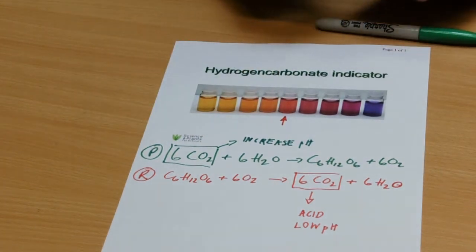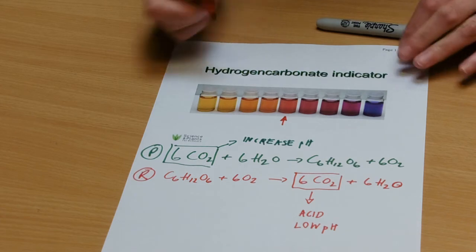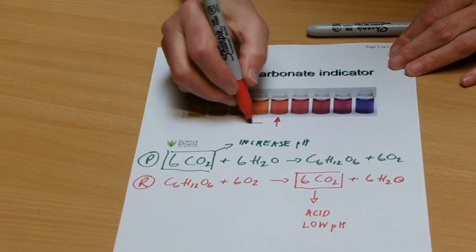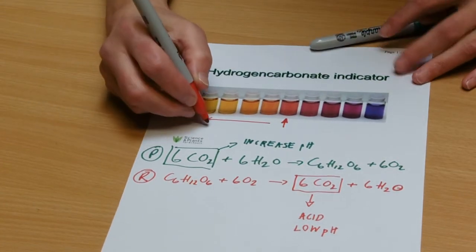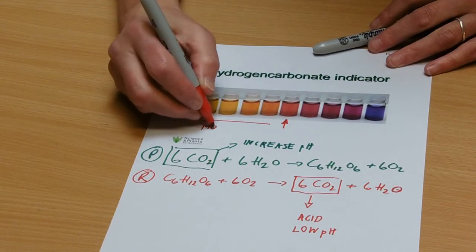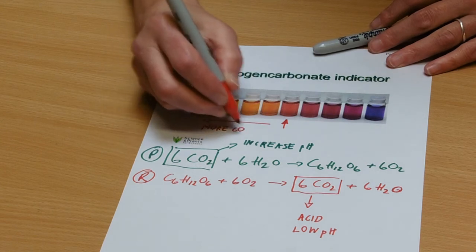If the pH goes down, that means that we've made more carbon dioxide. The indicator will go more yellow. So what does that mean? That means more CO2.